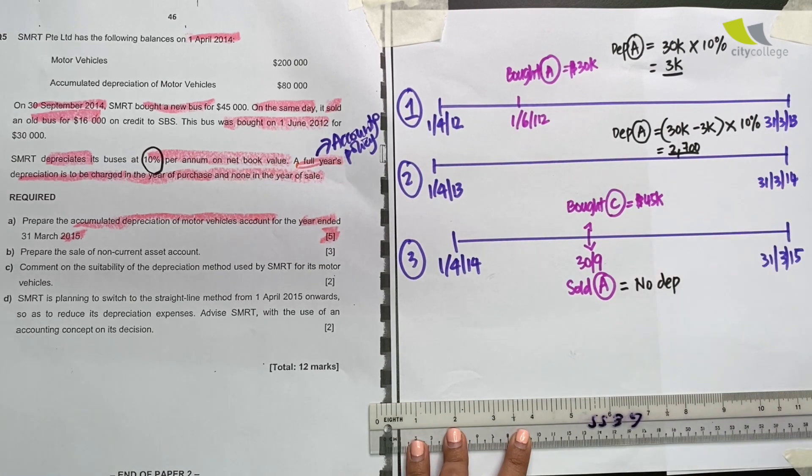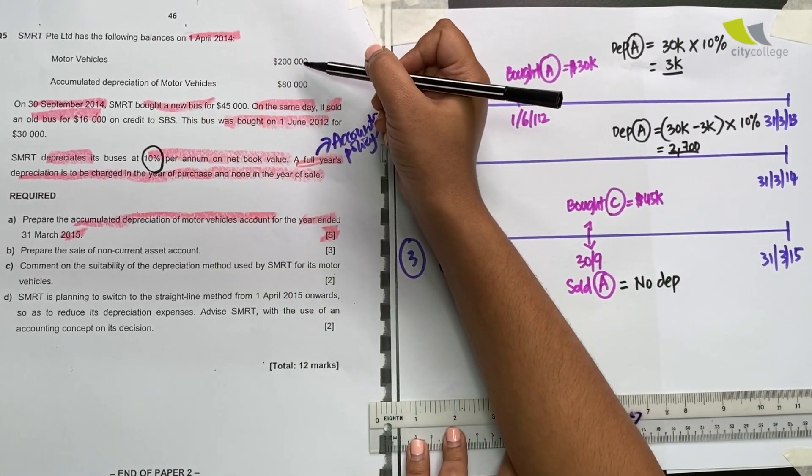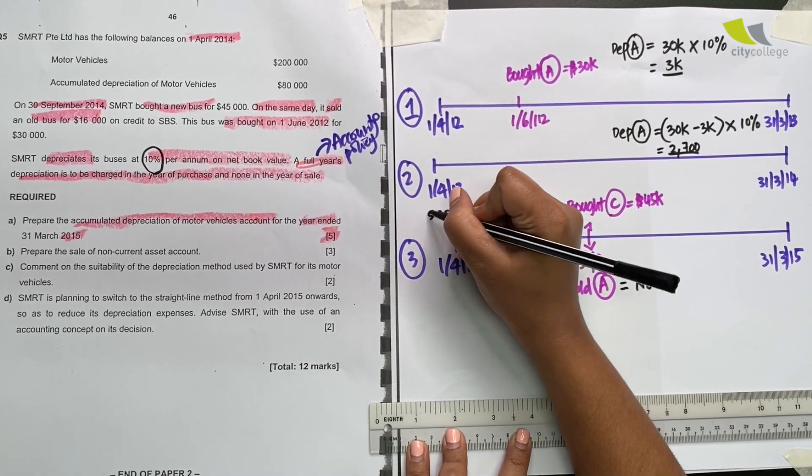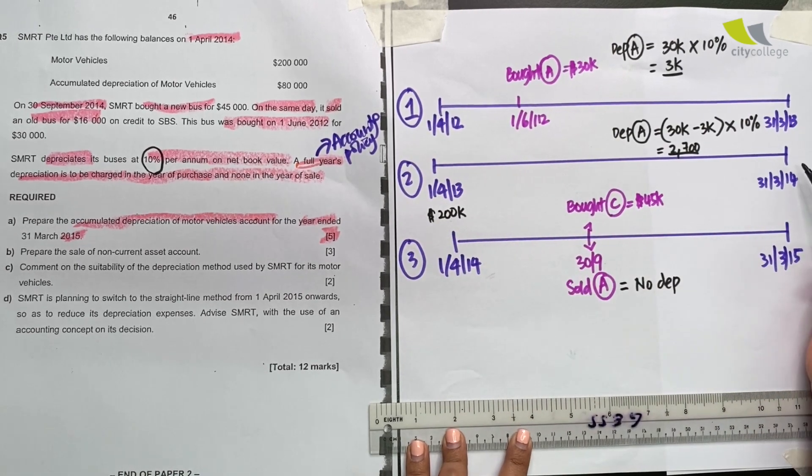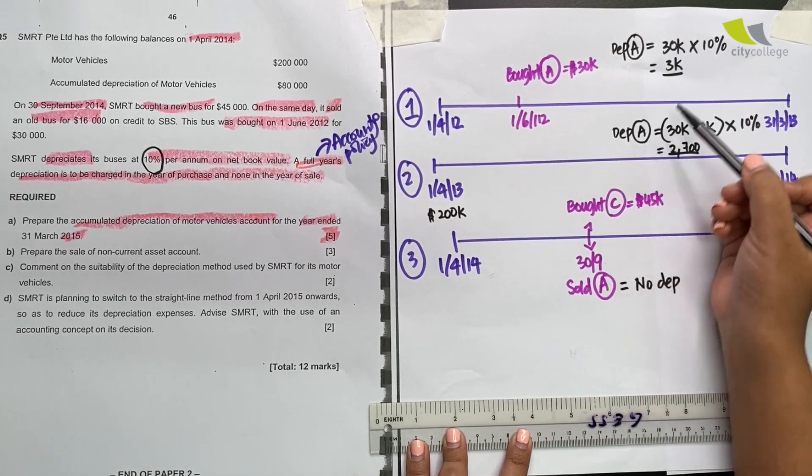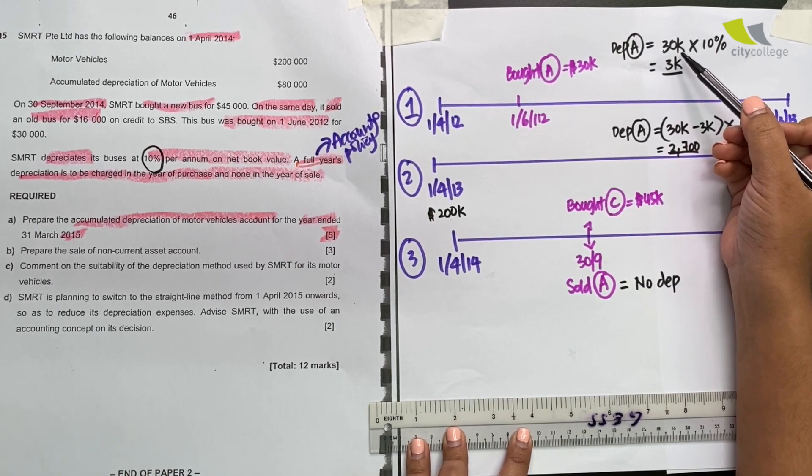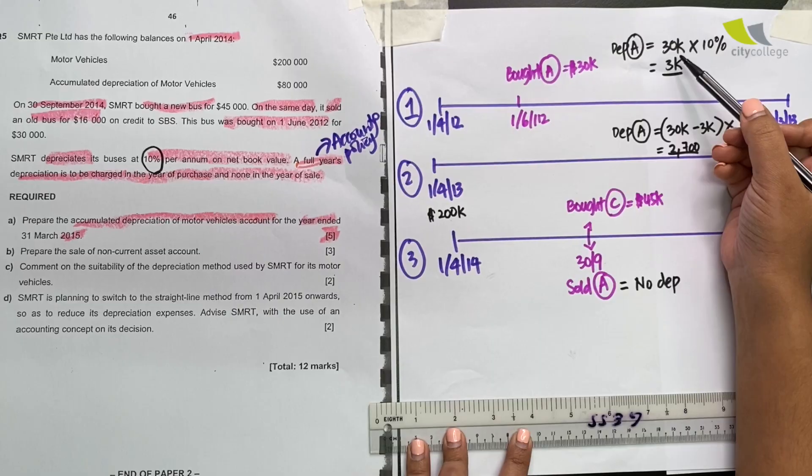Now you also have C which we have annotated, but seems like something is not accounted for. Let's revisit the question. Question says that on 1st April, we have motor vehicles worth $200,000. If I have $200,000 of motor vehicles here, but before that, I'm only talking about A that is worth $30,000, it means that there is something else besides A.